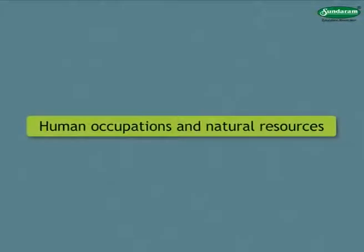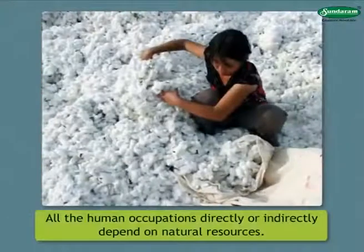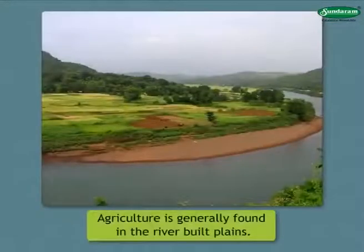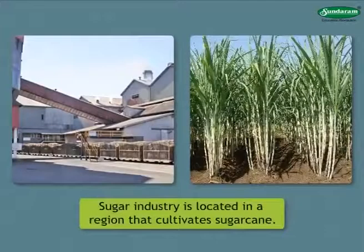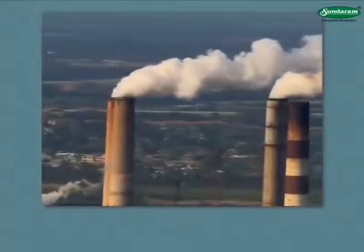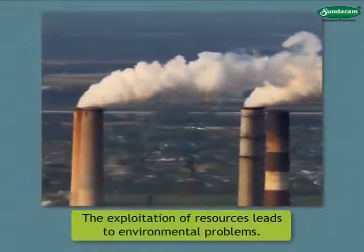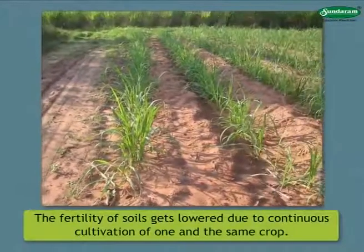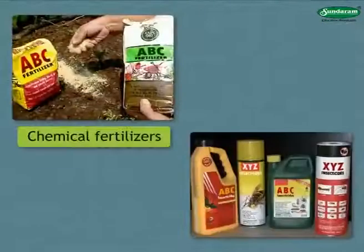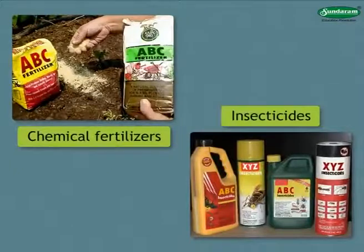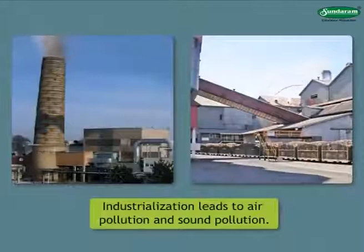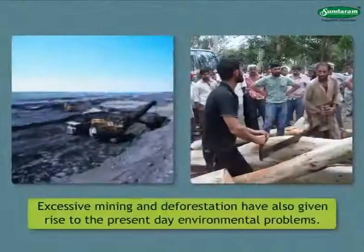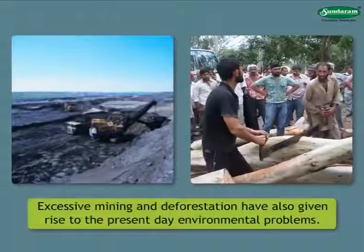All human occupations directly or indirectly depend on natural resources. Agriculture is generally found in the river-built plains. Sugar industry is located in a region that cultivates sugarcane. The exploitation of resources leads to environmental problems. The fertility of soils gets lowered due to continuous cultivation of the same crop. The use of chemical fertilizers and insecticides degrades the soil. Industrialization leads to air pollution and sound pollution. Excessive mining and deforestation have also given rise to present-day environmental problems.